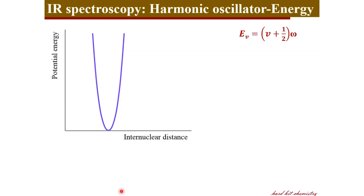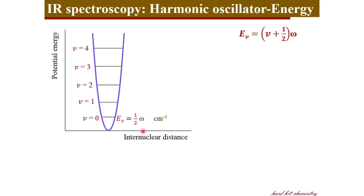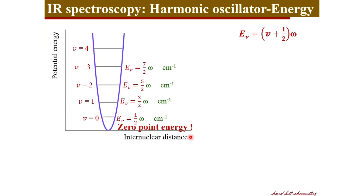Let's have a look at the energy values for different vibrational energy levels. For the first vibrational quantum number V = 0, the calculated energy from this expression will be ½ω. That means even at the lowest vibrational level V = 0, the system is associated with a minimal amount of energy, and this energy is called zero point energy. For V = 1, we reach 3/2ω; for the next level it is 5/2ω, and 7/2ω, and so on. Moving to higher and higher vibrational quantum levels gives higher and higher energies, with the lowest energy being ½ω — the zero point energy.